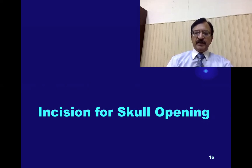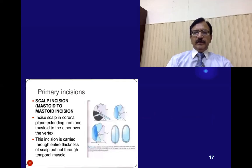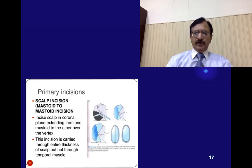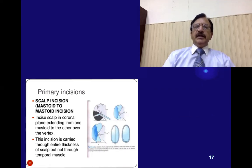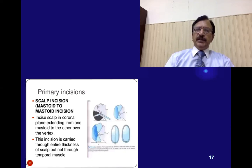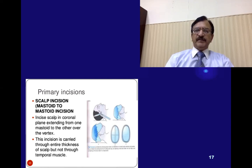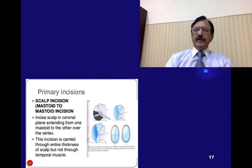The primary incision for the opening of the skull goes from one mastoid across the vertex to the other mastoid — called the mastoid-to-mastoid incision. It incises the scalp in the coronal plane and extends from one mastoid to the other over the vertex. The incision is carried through the entire thickness of the scalp and not through the temporal muscles.